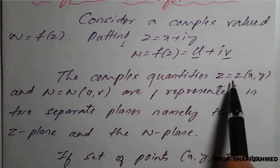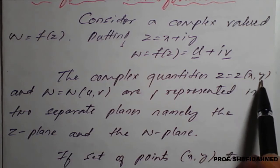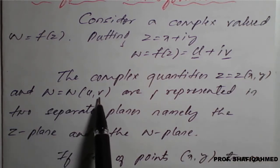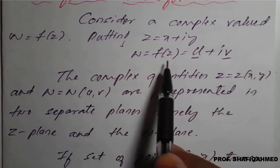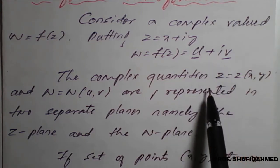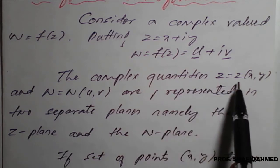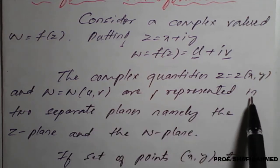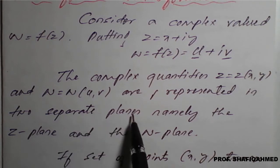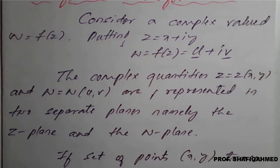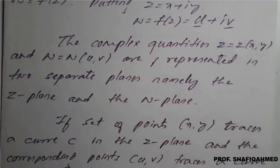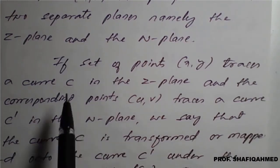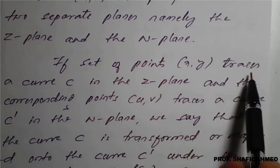The complex quantities z = z(x, y), which is a function of x and y, and w, which is a function of u and v — remember, z is a function of x and y but w is a function of u and v. However, u and v are also functions of x and y. These complex quantities z(x, y) and w(u, v) are represented in two separate planes: the z-plane and the w-plane. The z-plane belongs to x and y, while the w-plane is the u-v plane, though u and v are also functions of x and y.